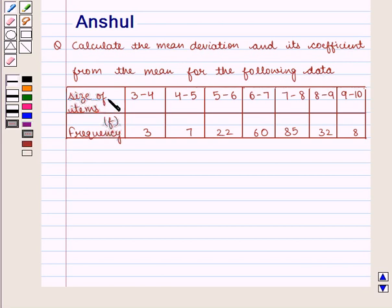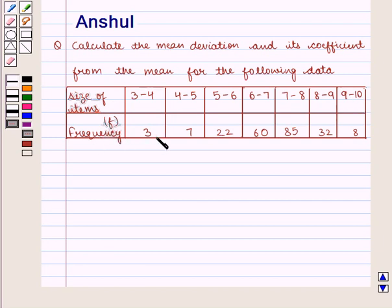The size of items is given as 3 to 4, 4 to 5, 5 to 6, 6 to 7, 7 to 8, 8 to 9, and 9 to 10, with the corresponding frequencies as 3, 7, 22, 60, 85, 32, and 8.